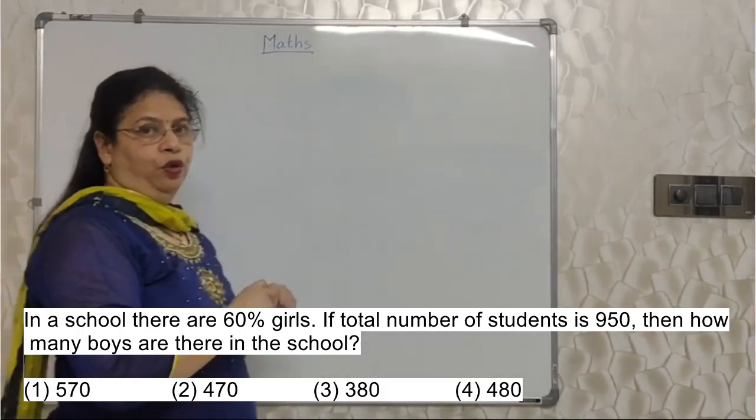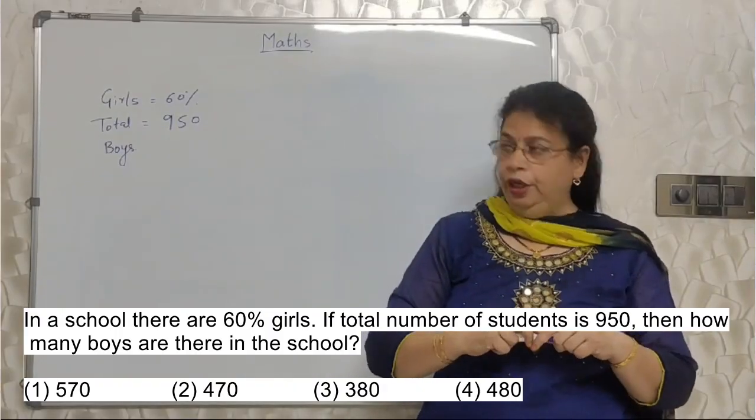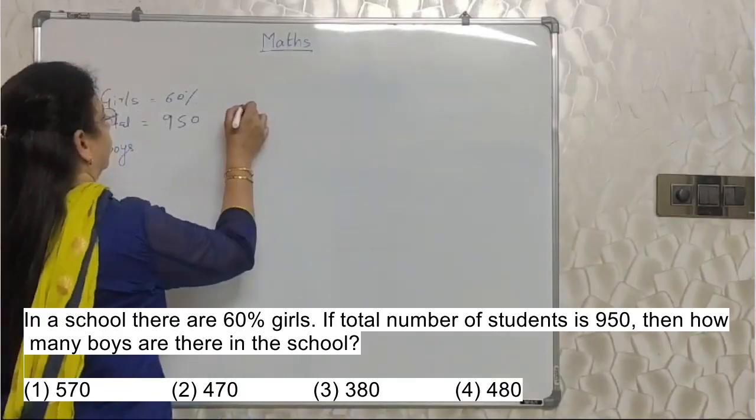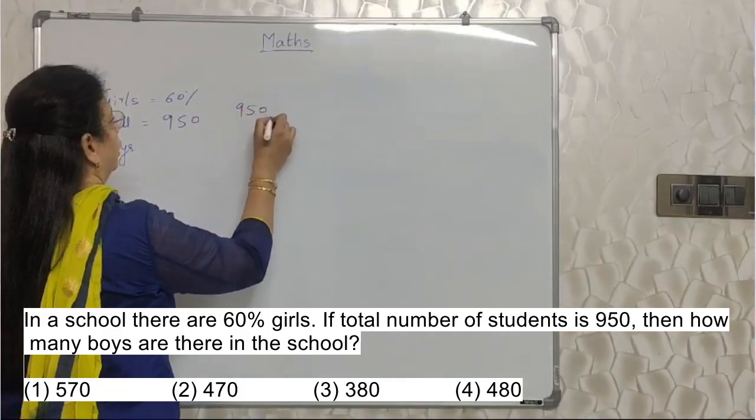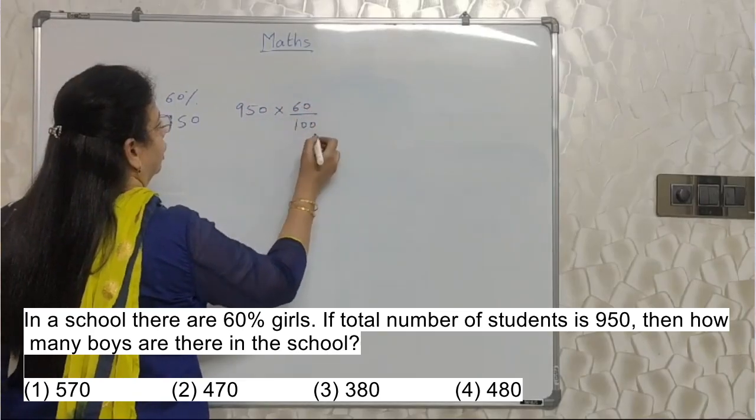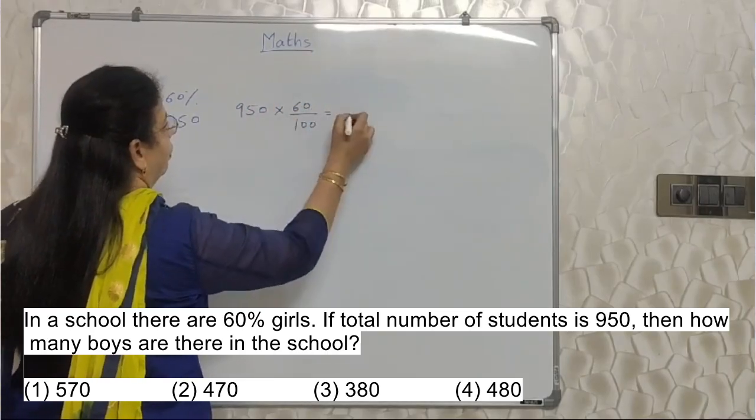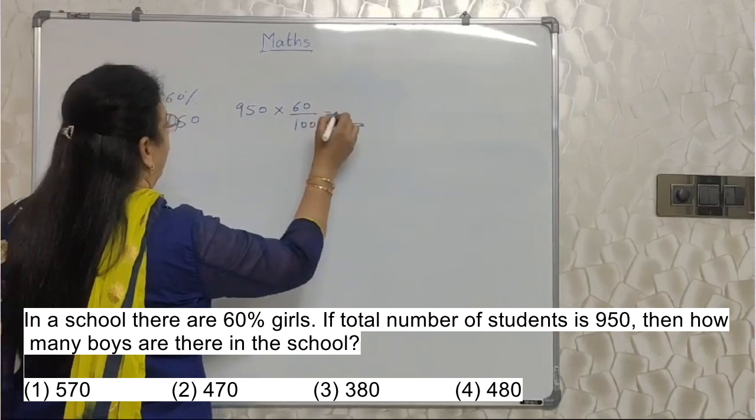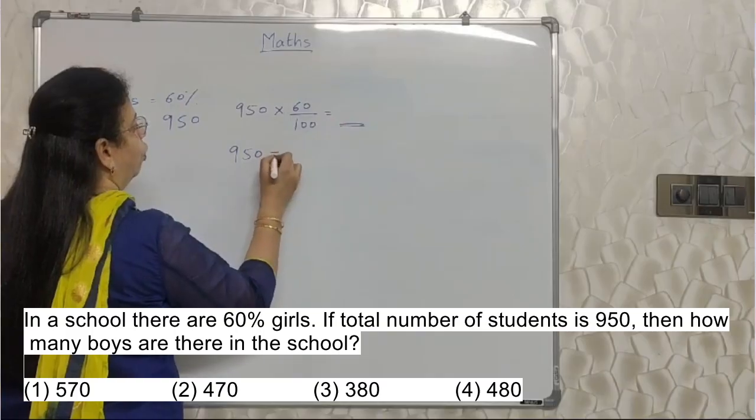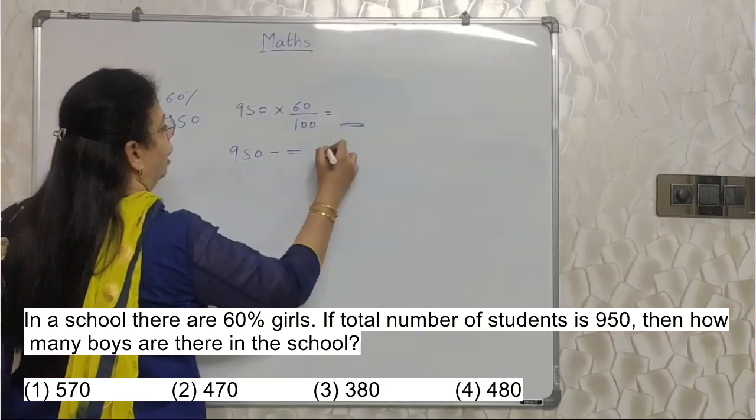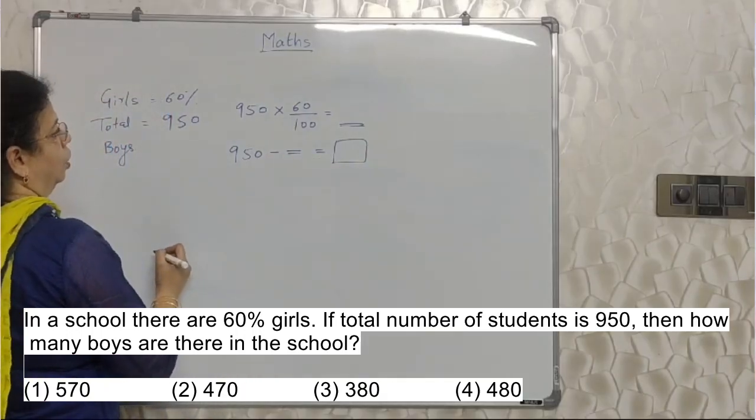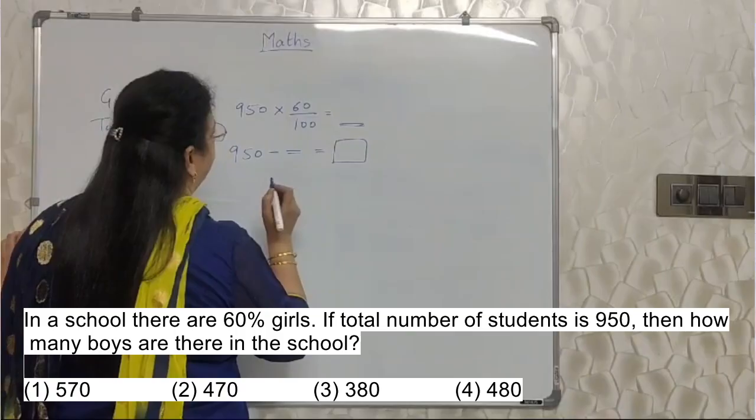What do we do? In this kind of sum, I have seen students doing 60% of 950. See what they do? 950 times 60%. So 60 upon 100. Then they will do this and they will arrive at this answer. After that, they will minus this answer from this 950. And then they will get the answer.